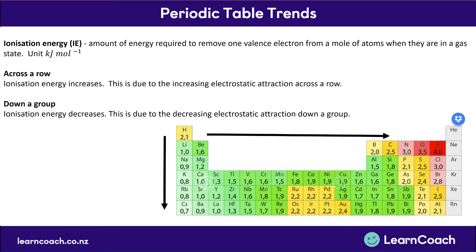Some new terms now. The ionization energy, or IE, is the amount of energy required to remove one valence electron from a mole of atoms when they are in gas state. So ionization energy is asking: if I were to take out one of the valence electrons, how much energy would that take?